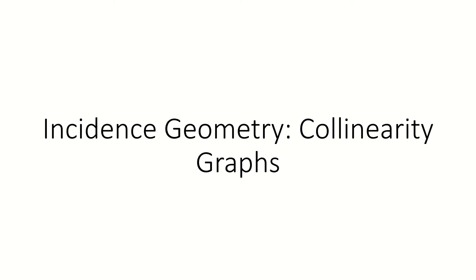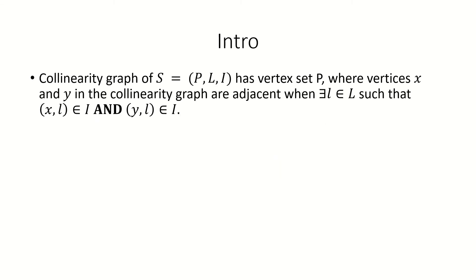Today we're going to look at a graph representation of incident structures: collinearity graphs. The collinearity graph of an incident structure is a graph with vertex set equal to the point set of our incident structure, and in which two vertices are adjacent if there's a line that their corresponding points are both incident to.